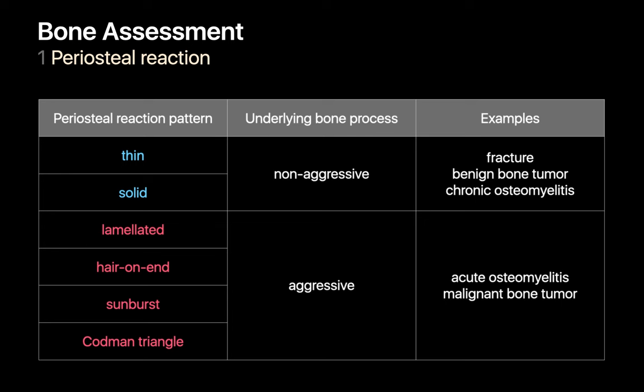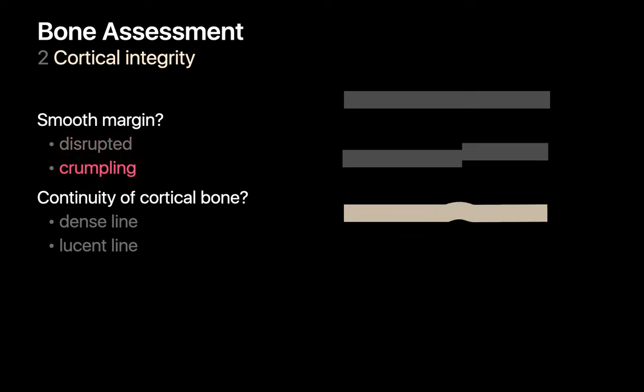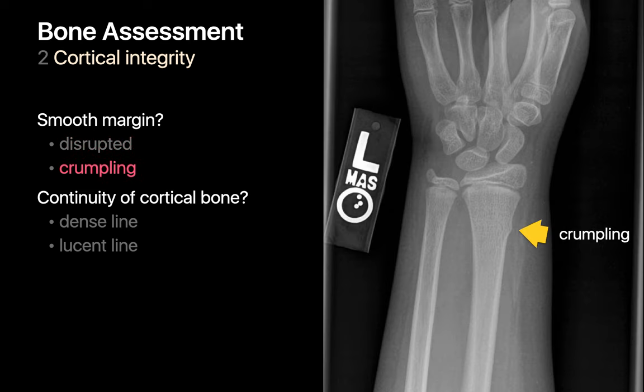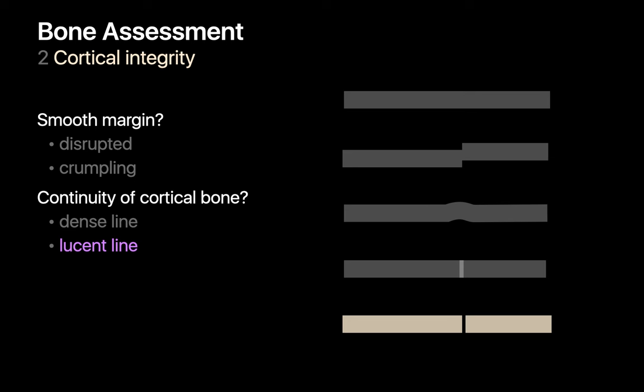After you check for periosteal reaction, check the integrity of the cortical bone for any evidence of fracture. Are the cortical margins entirely smooth and uninterrupted? Or do you see focal disruption or crumpling of the cortical margin, like in this child's distal radius? Or has a fracture resulted in a cortical bone discontinuity that looks like a dense line on x-ray because the cortical bone on both sides of the fracture plane slightly overlap? Or is there a lucent line because cortical bone on both sides of the fracture plane are now slightly distracted from each other?